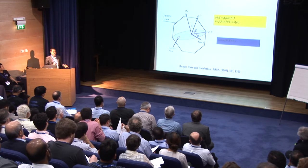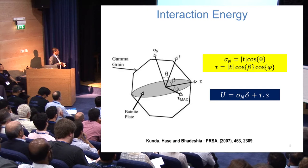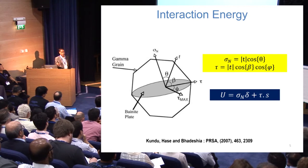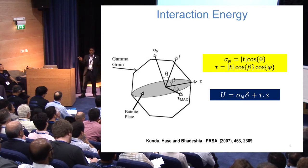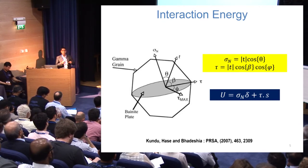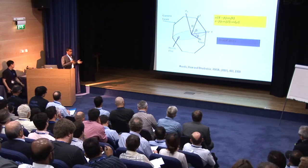Stress affects variant selection because of interaction energy, which originates from the strain associated with each variant interacting with the externally applied stress. Since all variants are differently oriented, they have different interaction energies, and that interaction energy adds to the chemical free energy available for transformation. So, the more the interaction energy, the more the variant selection — although we need to check whether this is correct all the time.